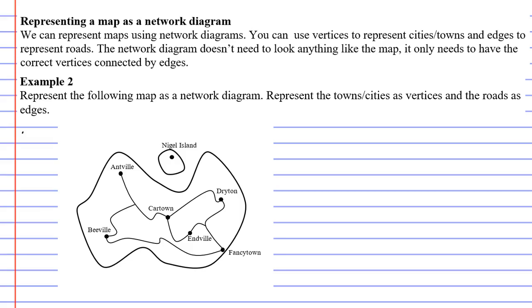So if we look at example two, we want to represent this map as a network diagram. You will notice that the vertices represent towns or cities. We'll start by counting the vertices. One, two, three, four, five, six, seven vertices.